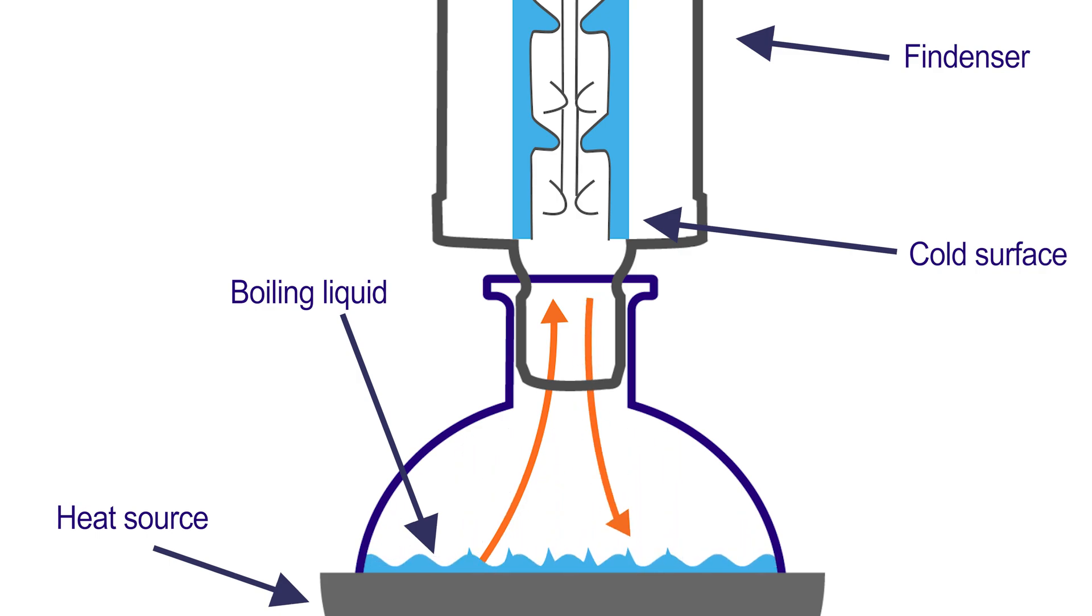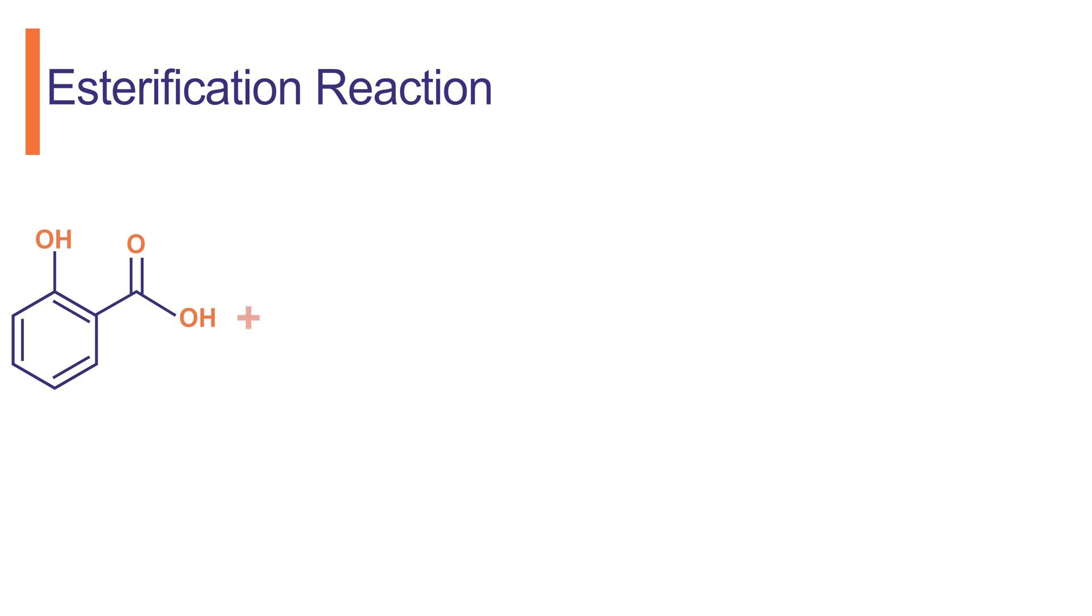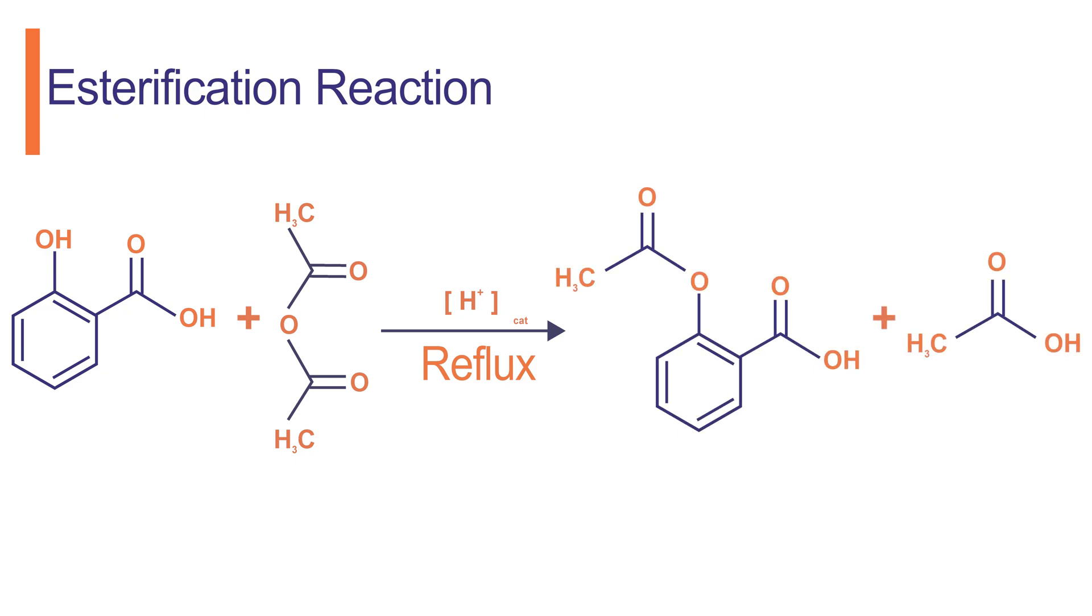An example of a chemical reaction that is heated to reflux is this esterification between salicylic acid and acetic anhydride, which in the presence of a proton source and using ethanol as a solvent will produce the well-known analgesic aspirin.